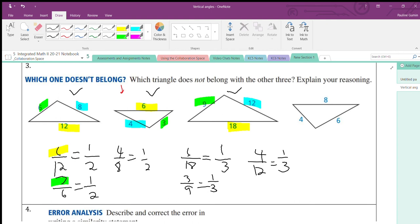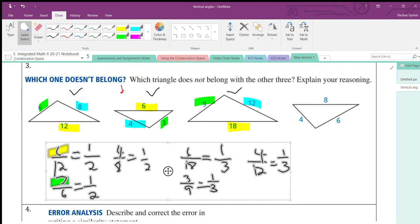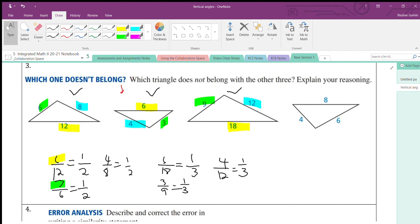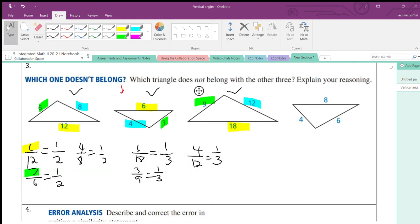Now, it says explain your reasoning. So, we have to show that there's no proportion there. I don't need to show the proportionality between these two triangles because they are both proportional to the one in the middle of them. So, let's prove now that this last one doesn't belong.